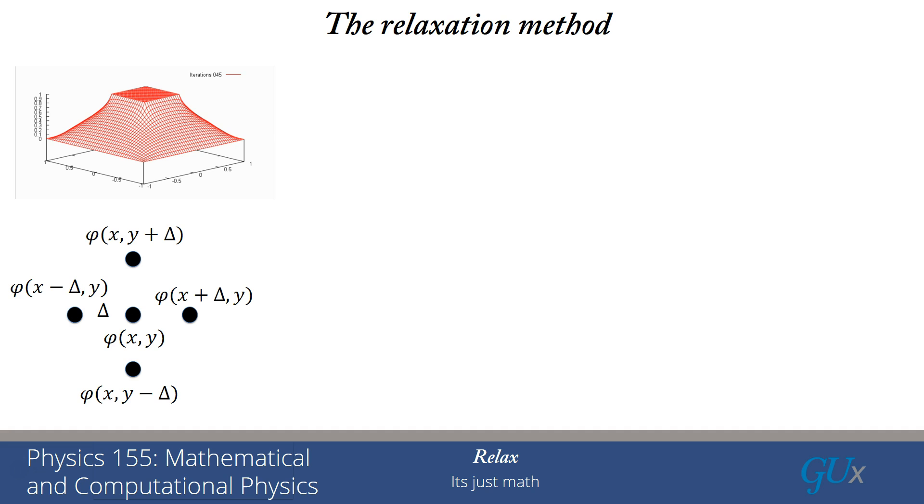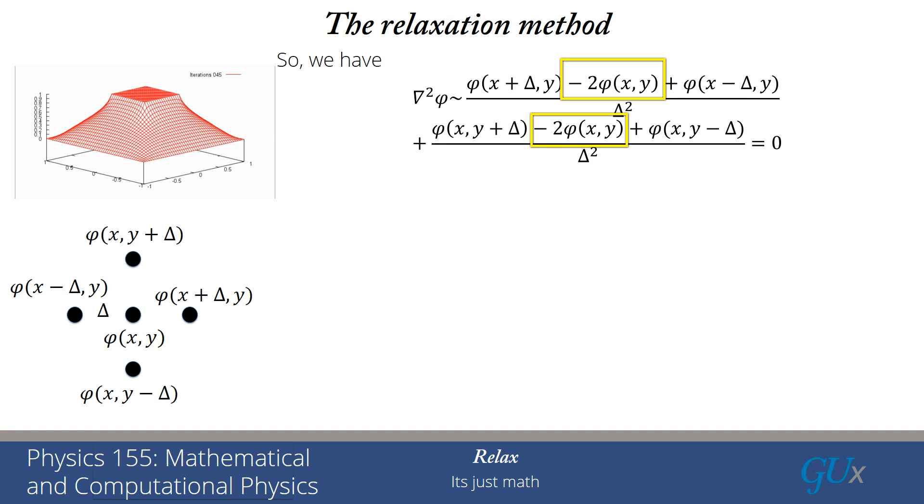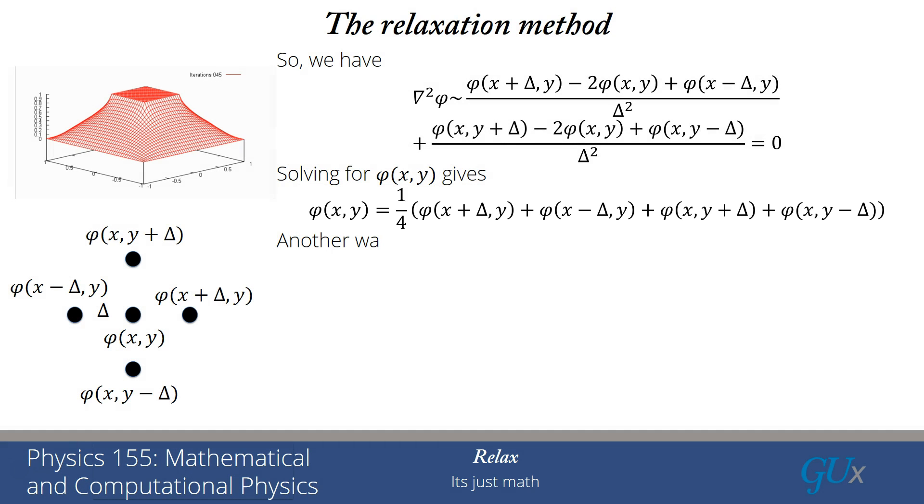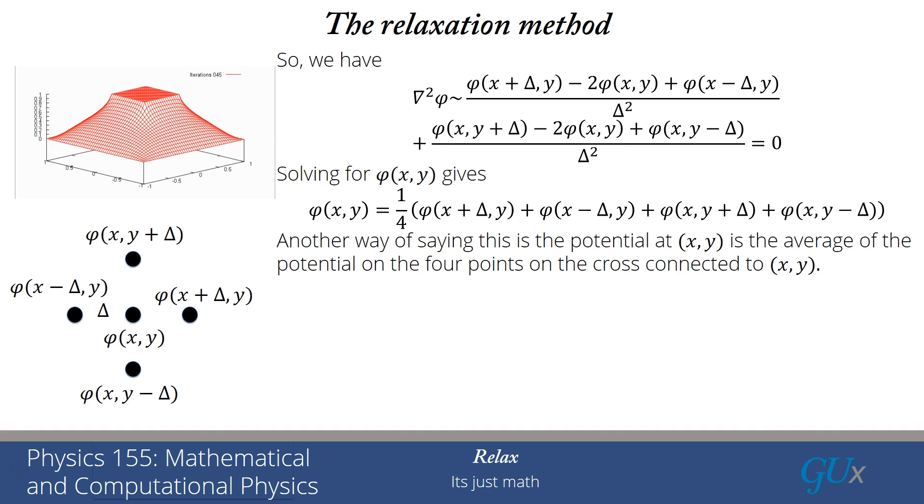So we've determined a discretized version of Laplace's equation. I'm just repeating that for you here. We're going to set that equal to zero. All I'm going to do is you notice there's a phi of x, y. There actually are four of them in this equation. I'm going to just solve for phi of x, y. And what I'm going to get is an equation that says phi of x, y is one fourth the sum of the four values of phi shifted by delta, either up or down or left or right. It's taking the average of those four points. So in words, we can say phi of x, y, the potential at x, y, is the average of the potential on the four points on the cross connected to x, y. And when this occurs, I actually satisfy Laplace's equation. And so this motivates the idea for the relaxation method.